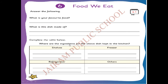Where are the ingredients - I-N-G-R-E-D-I-E-N-T-S ingredients - for the above dish? Above means the dish mentioned before, kept in the kitchen. The kitchen will have all the cooking items. First one is shelves - S-H-E-L-V-E-S shelves. Freezer - F-R-E-E-Z-E-R freezer, that is inside the fridge. Next, refrigerator - R-E-F-R-I-G-E-R-A-T-O-R refrigerator. Next, others.